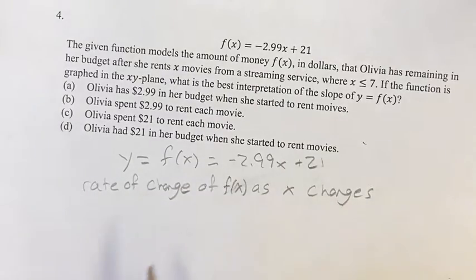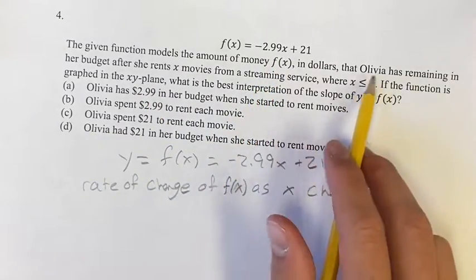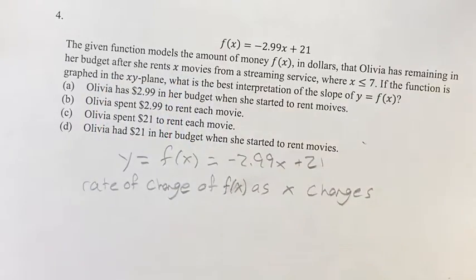Now that we know this, we can see what f(x) represents, what x represents, and that will give us one of these answers. So the given function models the amount of money f(x), in dollars, that Olivia has remaining in her budget after she rents x movies from a streaming service.